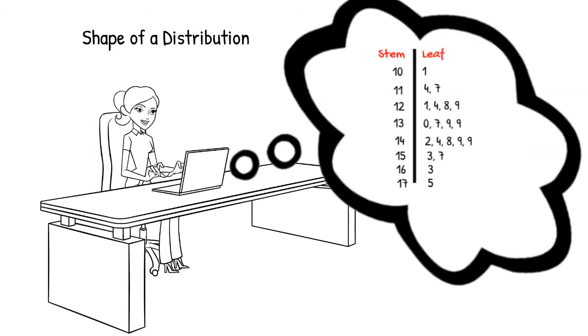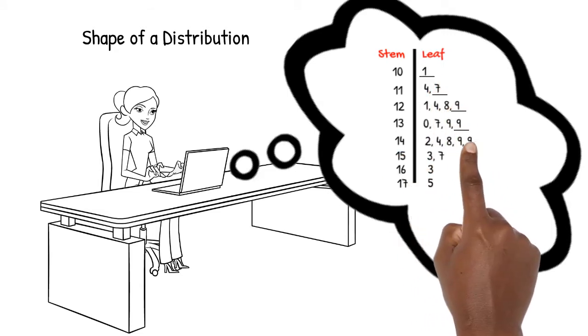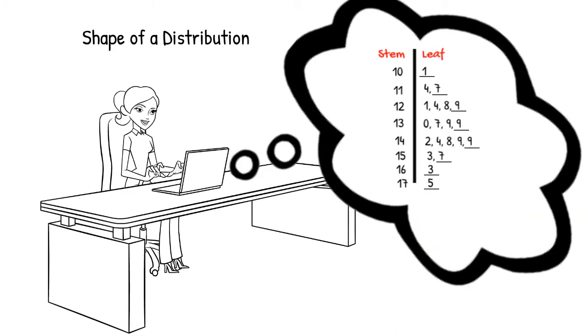We also recently learned how to make a stem and leaf display. The shape created by the last number in each leaf also tells us the shape of a distribution.